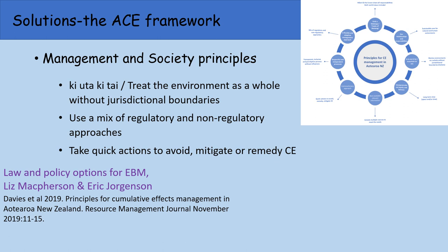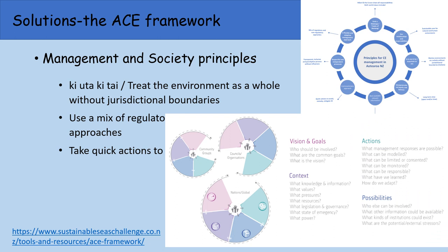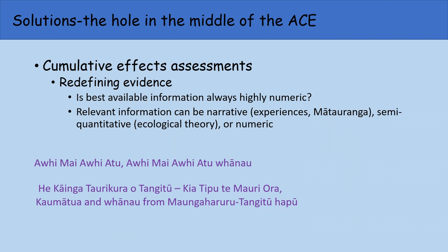But there are three that are more specific: particularly treating the environment as a whole without jurisdictional boundaries, using a mix of regulatory and non-regulatory approaches, and importantly, taking quick actions to avoid, mitigate or remedy cumulative effects. Following these principles, a framework — the AT Aurora cumulative effects framework — was developed and validated at a workshop with 58 people. This framework is about how you bring people together, find their visions and goals, and decide on types of actions and possibilities. But there was a hole in the middle: nothing about how to assess and predict cumulative effects, which brings us back to lack of information.